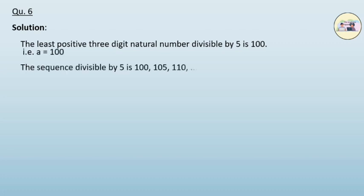The sequence divisible by 5 is 100, 105, 110, so on till 995. Therefore, d is 5, t_n is 995, and we have to find n.